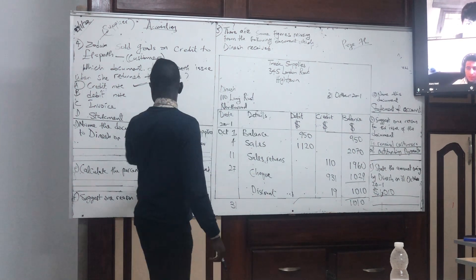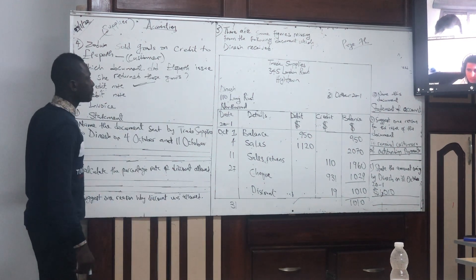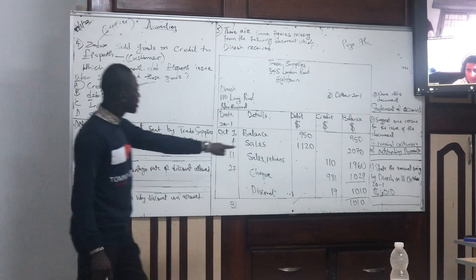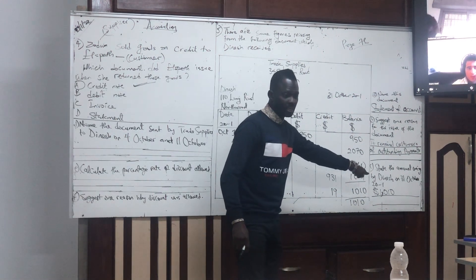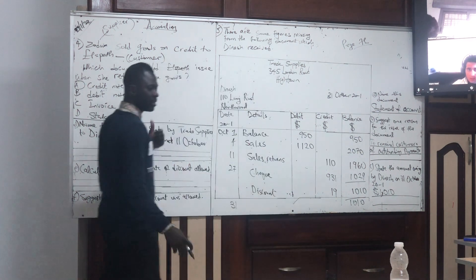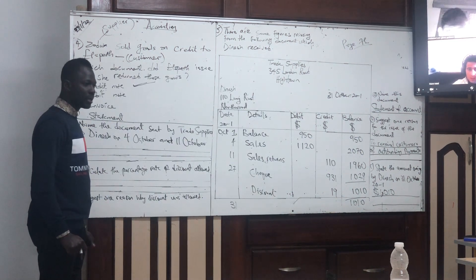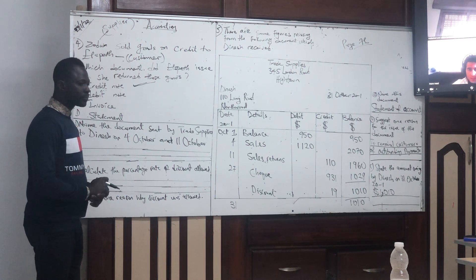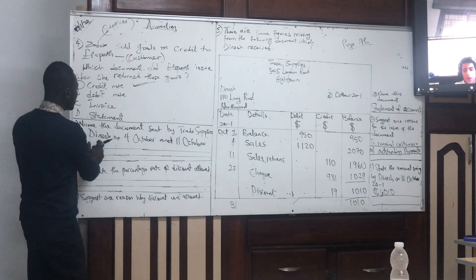Then we move on to question D. I think you can see this is A, B, C — then we have D. Where's Adam? Yes. Okay. Alright. For D.